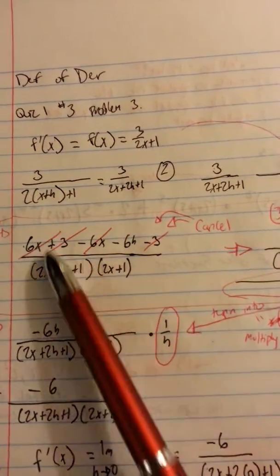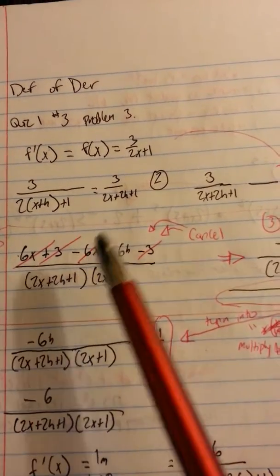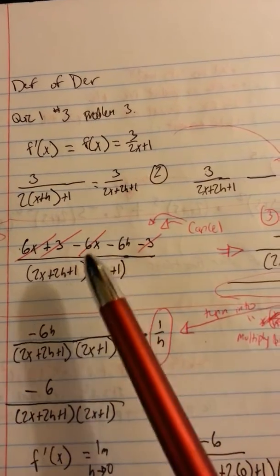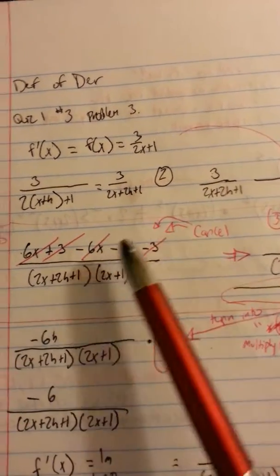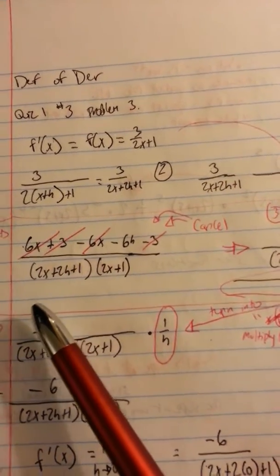What do you get? You get 6x plus 3 minus 6x minus 6h minus 3 over these two things that we got over here. So we just brought them over here. So now we have this. Now, as you can see here, I've already done this problem, but it's a great way to explain it.